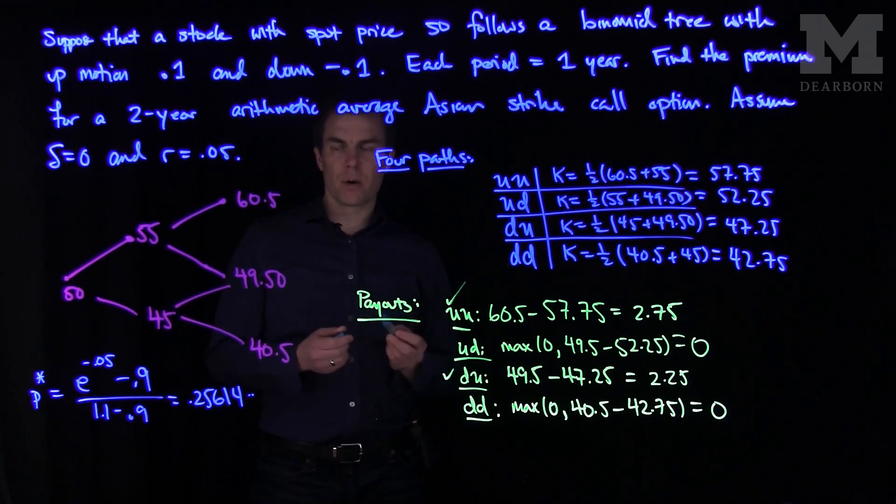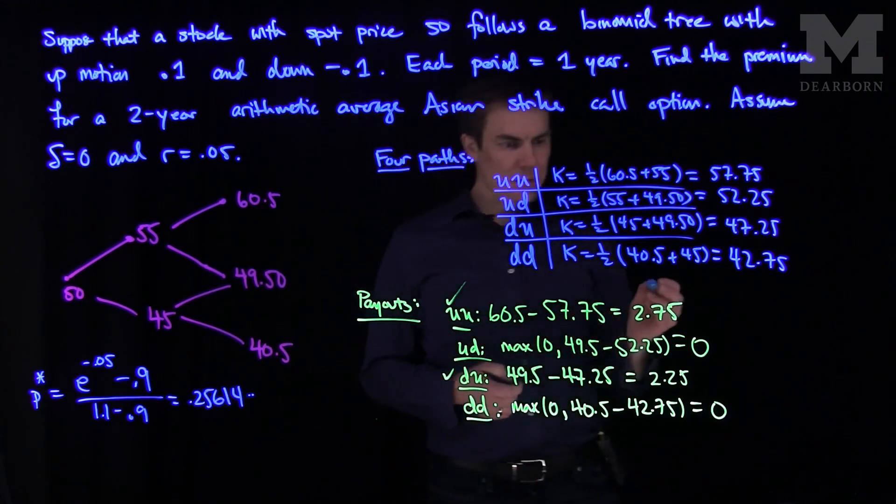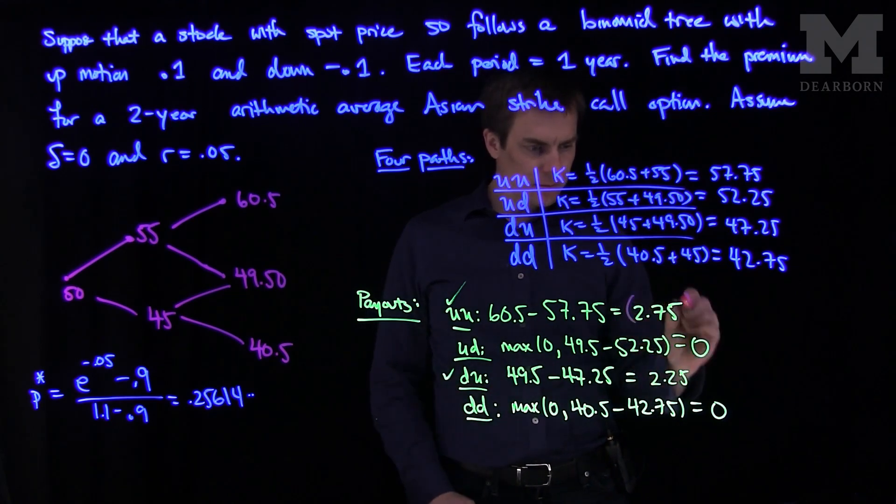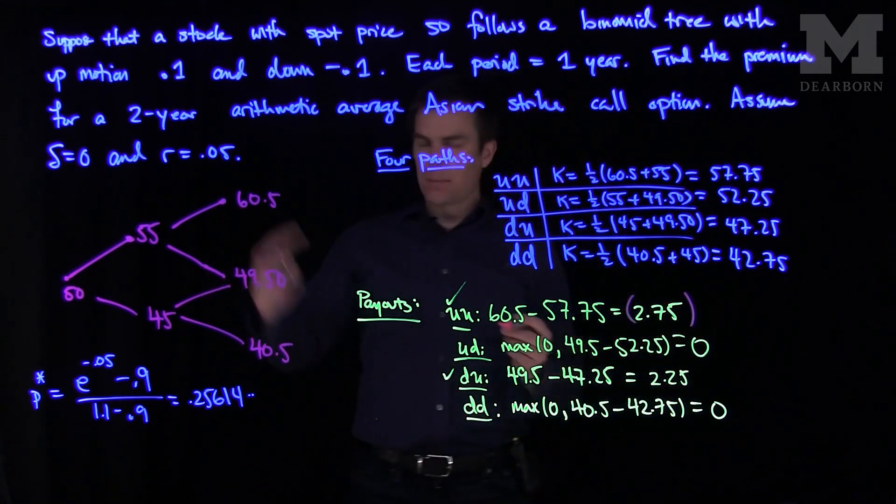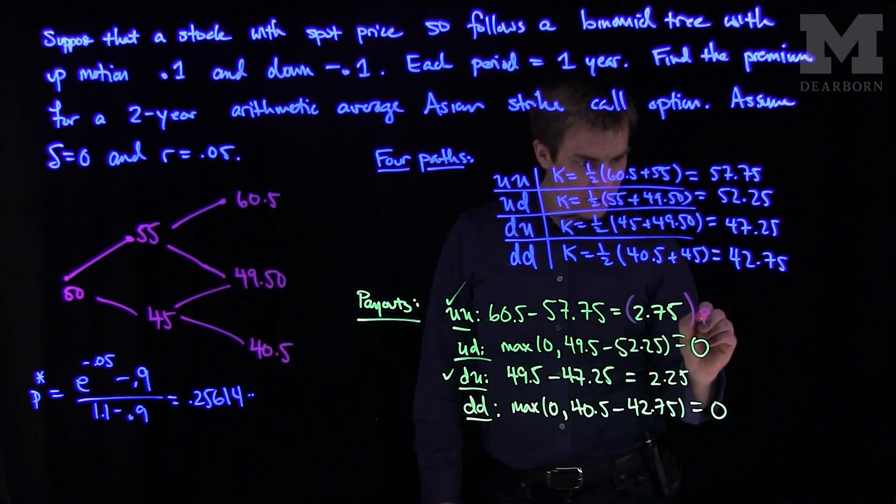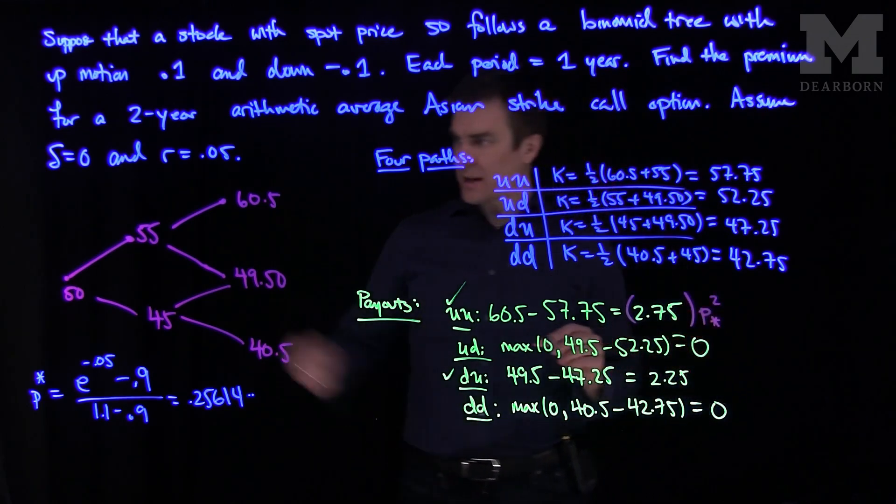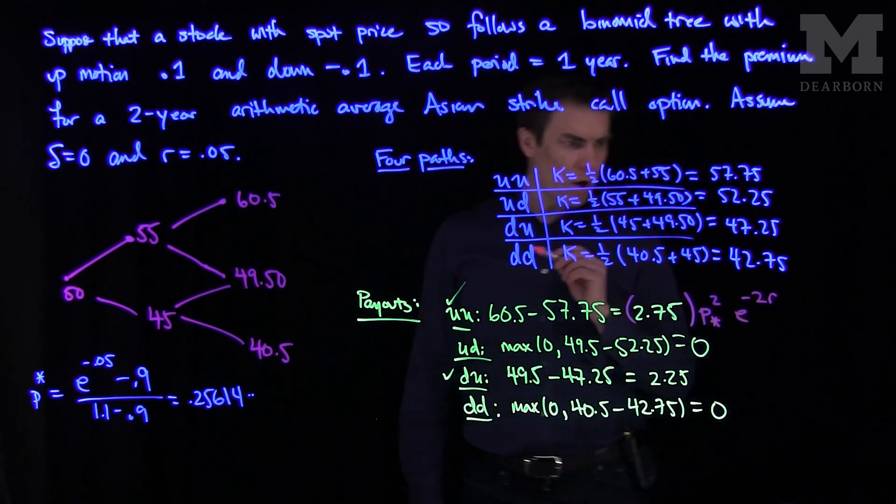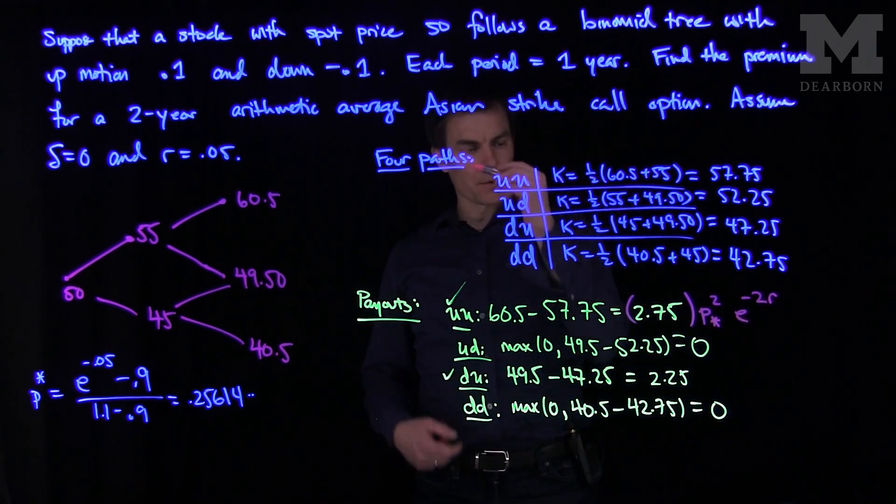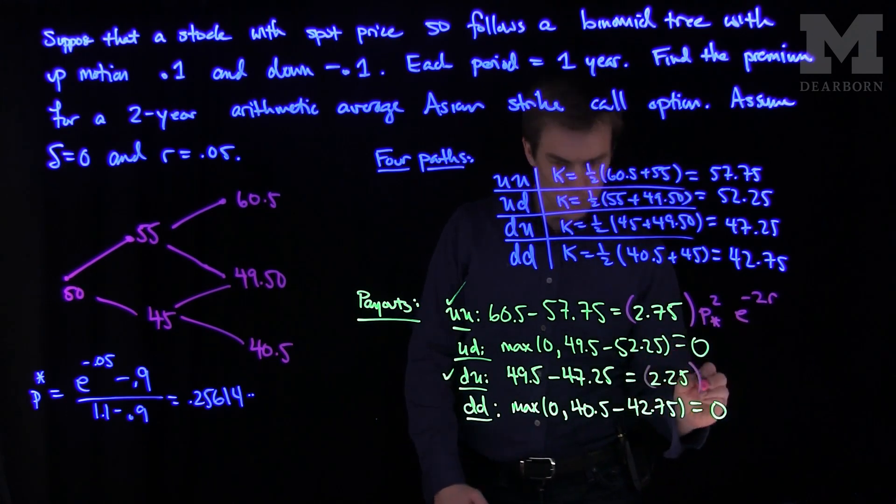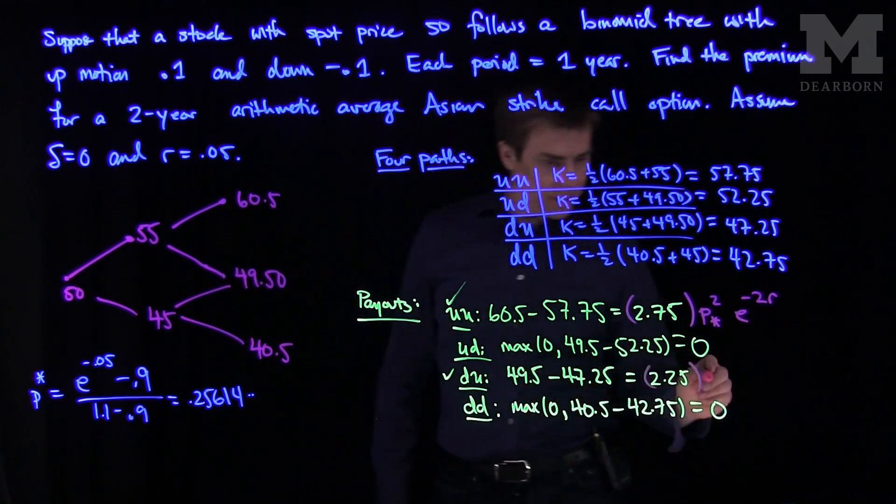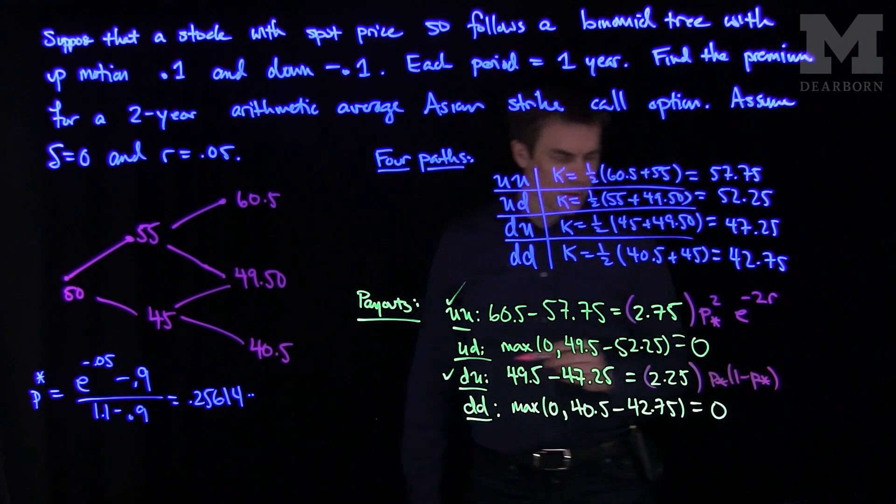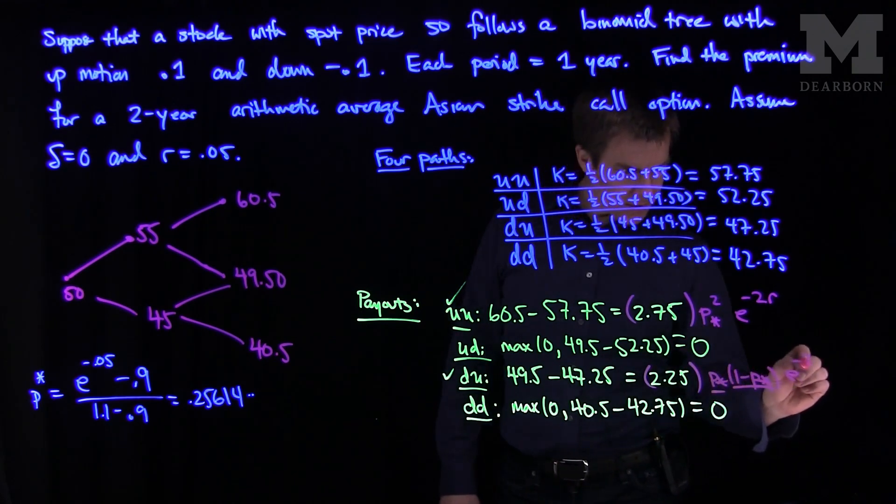And so now to write down the final answer, all we do is just say, okay, what we'll have is we're going to have two payouts. So we're going to focus on this payout over here. So we get this payout. How do we get to this payout, this up-up payout? Well, I need to multiply this by p-star squared, because that's two up motions, and then e to the minus 2 times r over here, because that will bring it back with interest. And then over here, we'll hit this with what? I went down then up, so I'm going to do a p-star over here, and then a 1 minus p-star. That gives me a down over here and an up over here, e to the minus 2r.